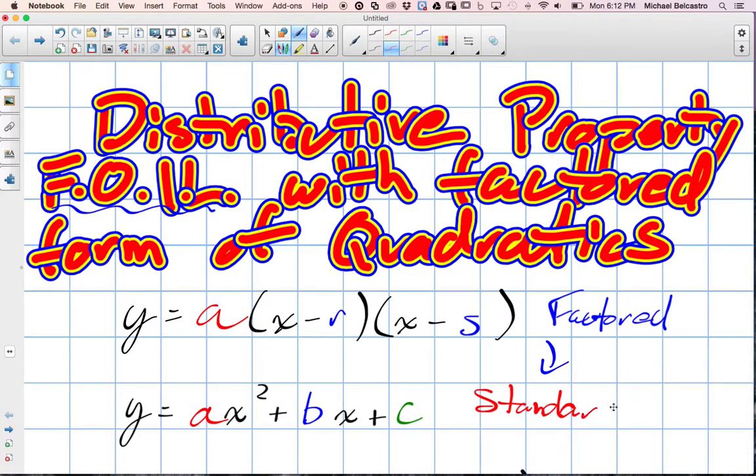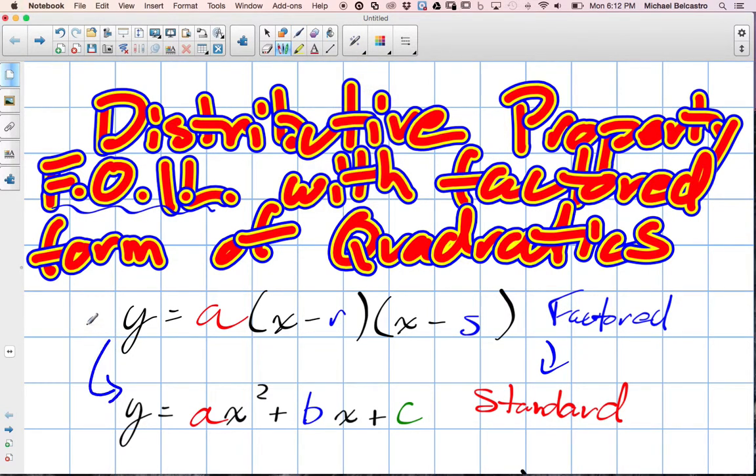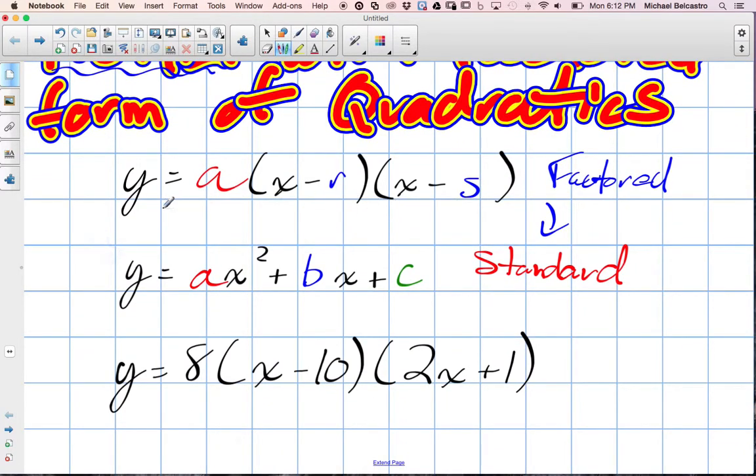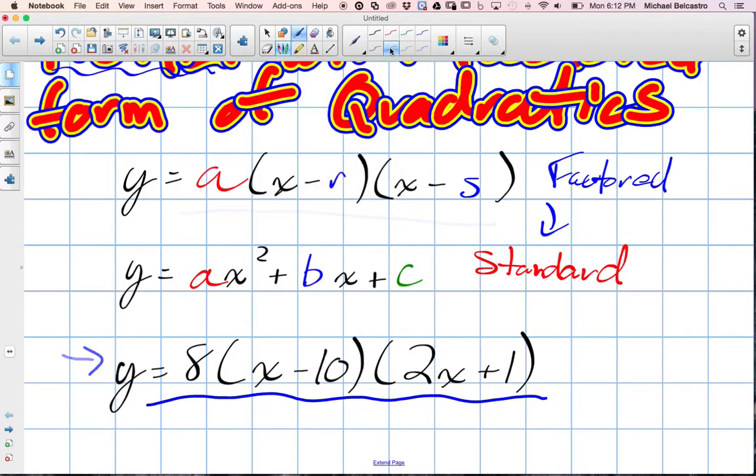Sometimes it's just something like where a teacher wants us to express things in standard form. Sometimes we want to go to standard form because there's some kind of advantageous use of it. So we're in factored form here, and this is going to be the question we're going to use. We're going to go from that factored to standard form, and the process is called FOIL.